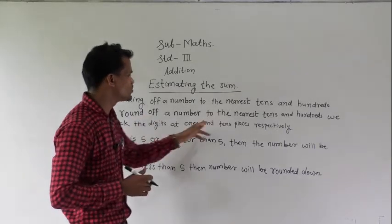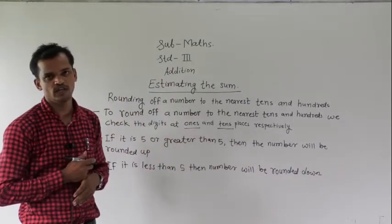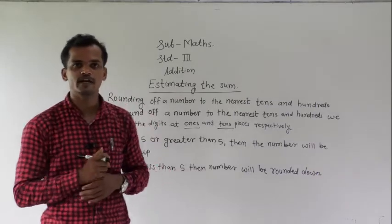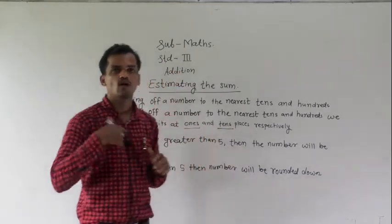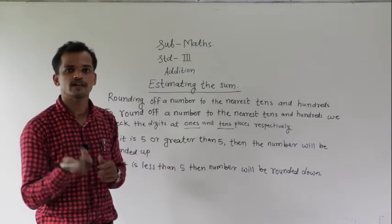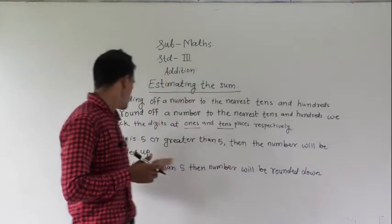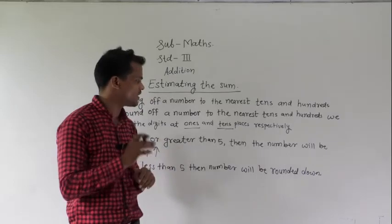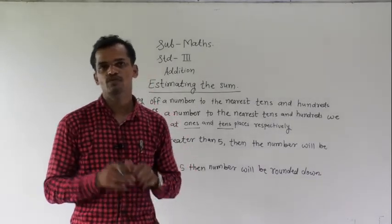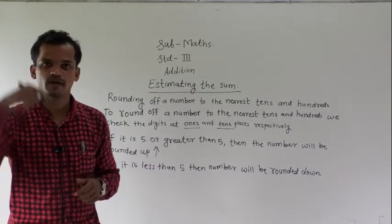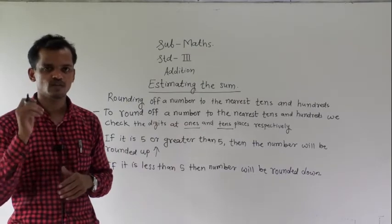To round off a number to the nearest 10 and 100, we check the digit at the ones and tens place respectively. If you want to round off a number to the nearest 10, see the ones place digit. If it is 5 or greater than 5, the number will be rounded up. If it is less than 5, the number will be rounded down.